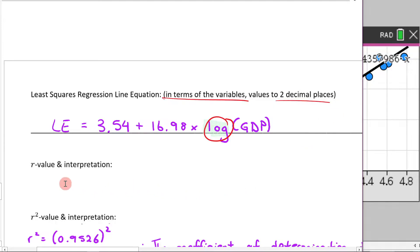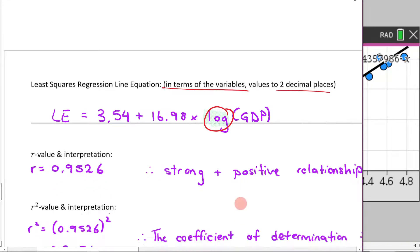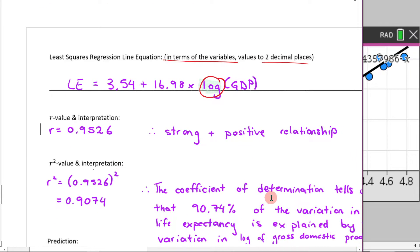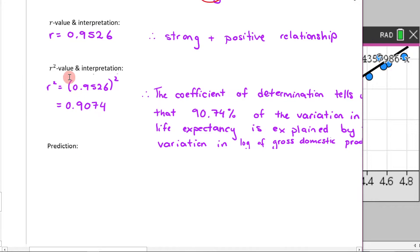So you have to make sure that you're writing it in terms of the variables. That means you're not writing Y and X, but you're writing log life expectancy and log of GDP. The other thing that people mess up is they forget to write in the transformation here, but you have to remember to write in the transformation there. We've done it correct to two decimal places as specified. The next thing we would do is the R value and the interpretation. Now we've already done that. We've already figured out that the R value is 0.9526. And we can comment on that as well. It's strong and a positive relationship.